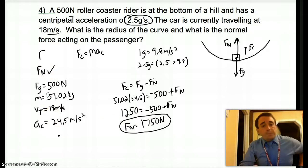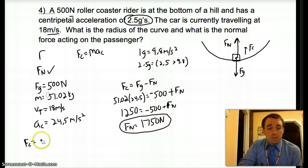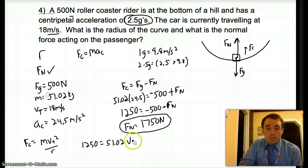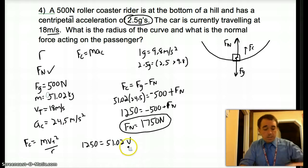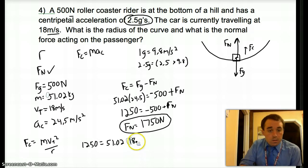To find the radius, the easiest thing to do is, now that I know my centripetal force, 1250 newtons, I know that centripetal force is m vt squared over r. I'm trying to find r, so I have centripetal force of 1250 equals 51.02 times vt, which is 18 meters per second. That's going to be squared over r.